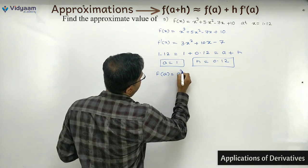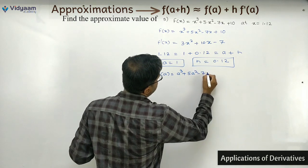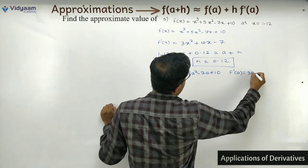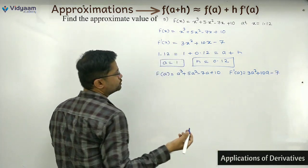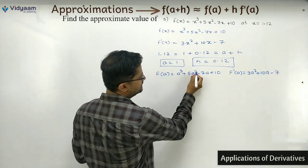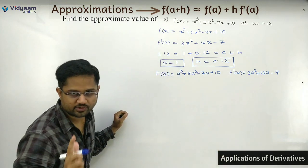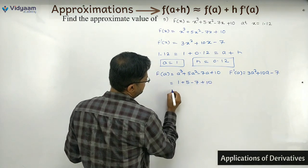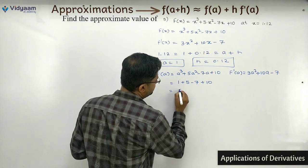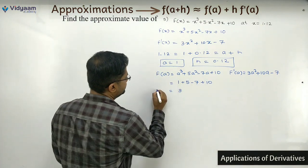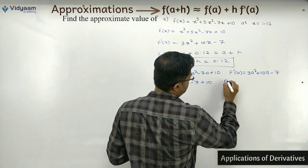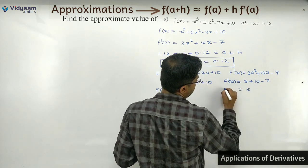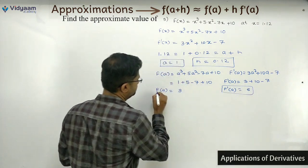Step 4: f(a) = a³ + 5a² − 7a + 10 and f'(a) = 3a² + 10a − 7. Substituting a = 1: f(a) = 1 + 5 − 7 + 10 = 9. And f'(a) = 3 + 10 − 7 = 6. So f(a) = 9 and f'(a) = 6.